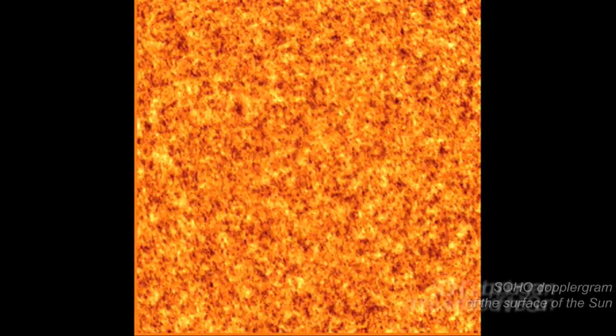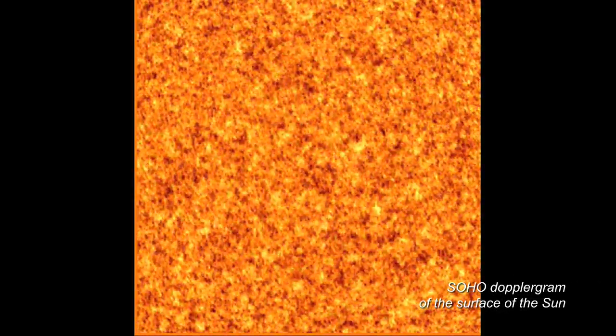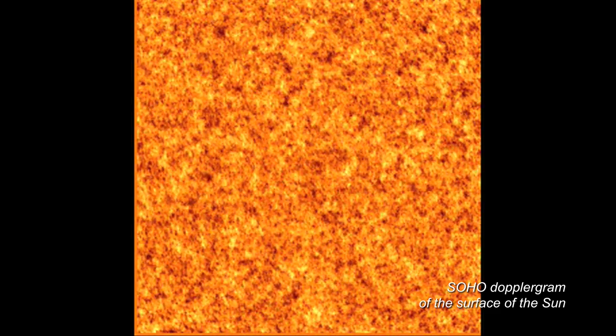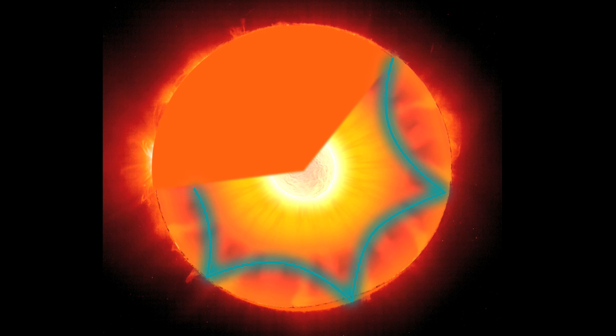To probe the solar interior, scientists monitor the Sun's surface as it heaves rhythmically with a period of about five minutes. These motions are due to sound waves reverberating through the solar interior, sensing the layers and movement of underlying hot gas. Analyzing these sound waves using a technique known as helioseismology, scientists have revealed the first images of the Sun's convection zone and the structure of sunspots below the surface.